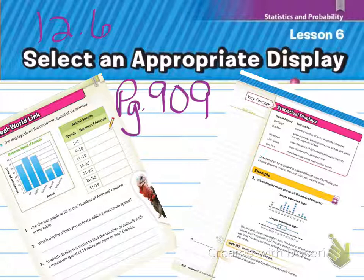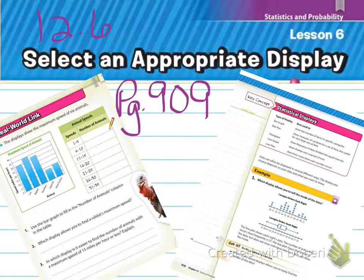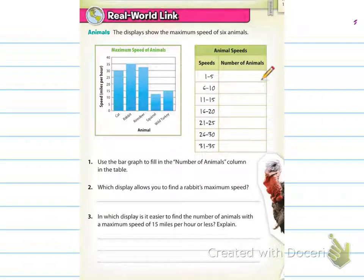Alright guys, 12.6 — select an appropriate display. Starts on page 909. The first thing is our real world link. It says the display shows the maximum speed of six animals. Go ahead and fill in one, two, and three based on that information.